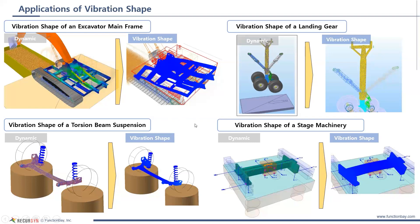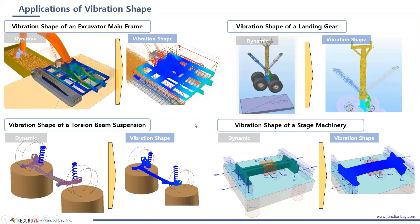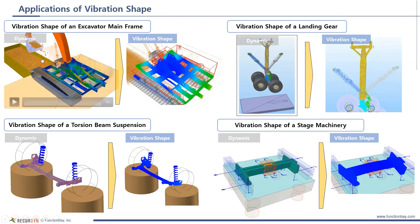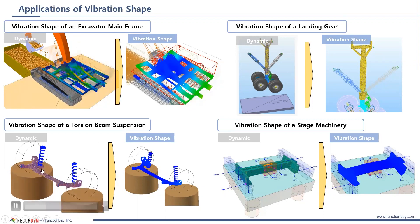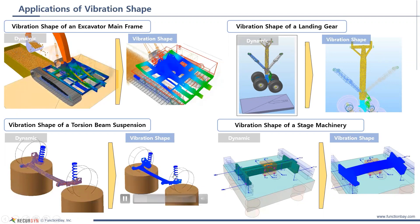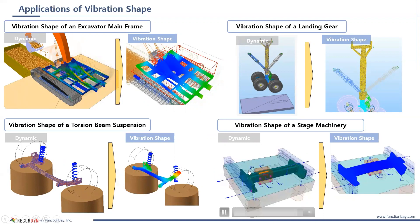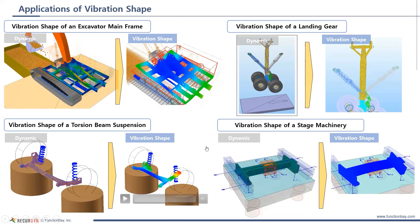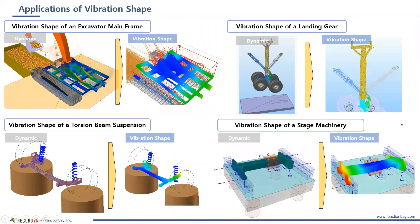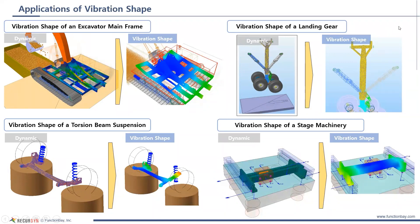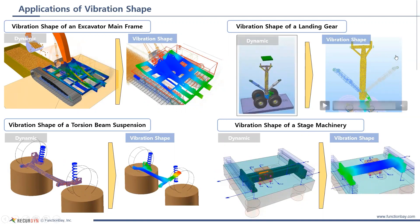Here are some examples of this toolkit in use. We're looking at the excavator mainframe — this is the RecurDyn simulation in the time domain, and then this is looking at the vibrational shape. Similarly, this torsion beam in operation and its vibrational shape. Next is this cross component and its vibrational shape. And finally landing gear — the main outer strut and its vibrational modes.